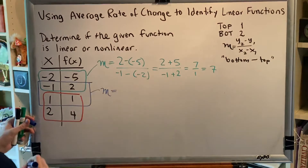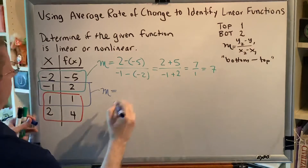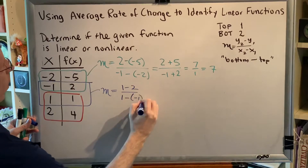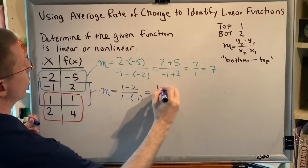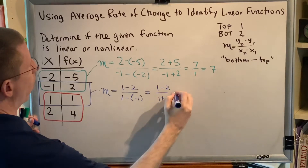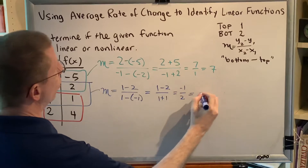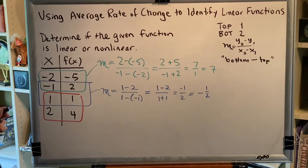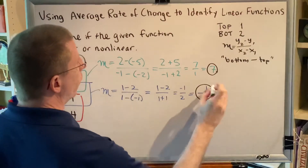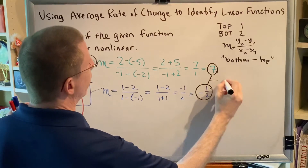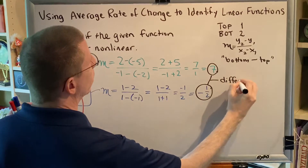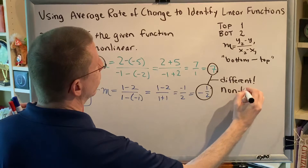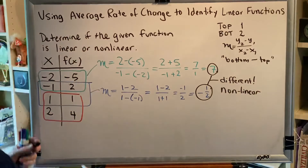Moving on to our next slope using the same method: y's bottom minus top would be one minus two; x's bottom minus top would be one minus negative one. Subtracting a negative is adding, so we get one minus two over one plus one, which is negative one over two, negative one half. At this moment we can stop — the moment you get two slopes that are different, you can stop and say this is not linear. So this is a nonlinear function.